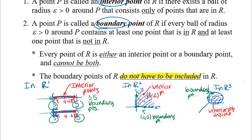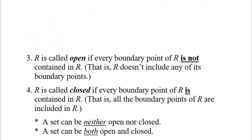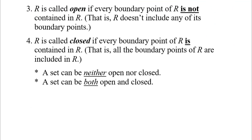Now let's look at the vocabulary words we were really interested in. A region R is called open if every boundary point of R is not contained in R. In R1, an example of an open region is the interval from 3 to 5 not including 3 and 5 — that's an open interval. Its boundary points are 3 and 5, and those are not included in the region.